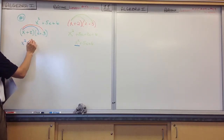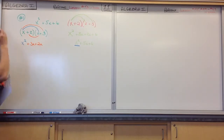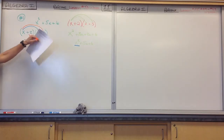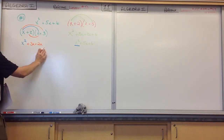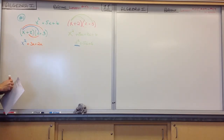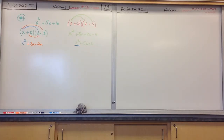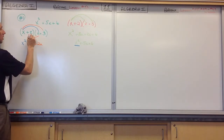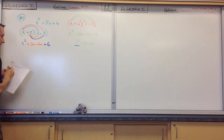3X. And then 2X. So in other words, in FOIL method, it is the outer and the inner. This is made up of the first times the first. This middle term is made up of my outer and my inner. And then how do I get this last term? 2 times 3 gave me 6.